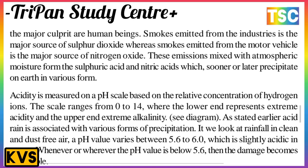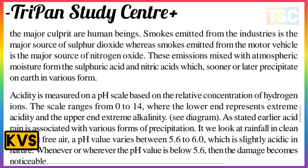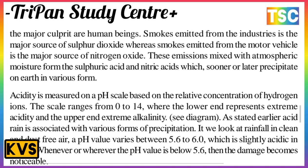Acid rain is measured on the pH scale, which is based on the relative concentration of hydrogen ions. The scale ranges from 0 to 14, with the lower end representing extremely acidic and the upper end representing alkaline. Acid rain is associated with various forms of precipitation. In clean and dust-free air, rainfall has a pH value between 5.6 to 6, which is slightly acidic in nature.